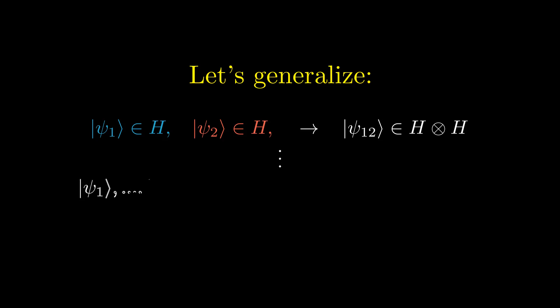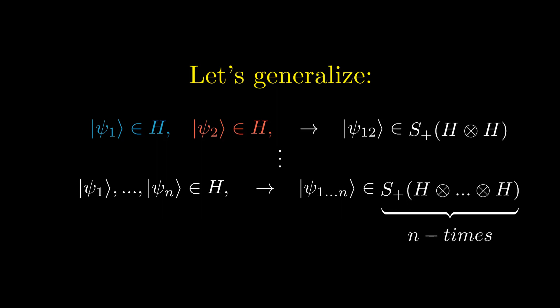We can extend this to n particles, where we just multiply the original Hilbert space with itself n times. We then symmetrize these spaces, denoted by writing S_+ of the combination of Hilbert spaces,